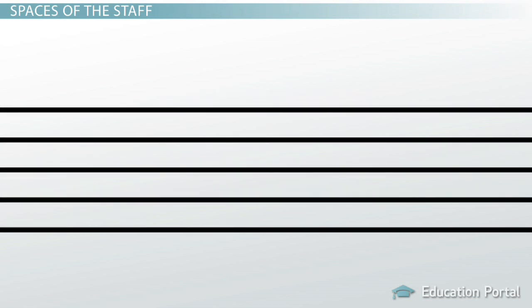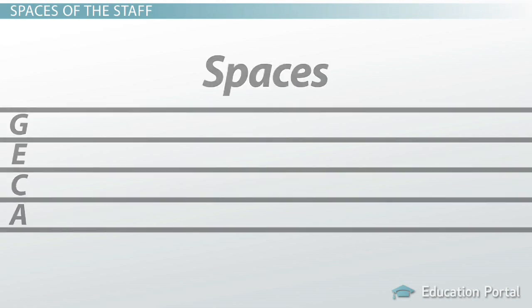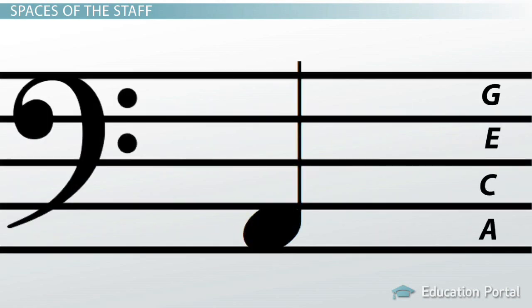Starting from the bottom of the bass clef staff, the spaces are A, C, E, and G. So when a note is placed on the bottom space, the musician knows to play or sing the pitch A.